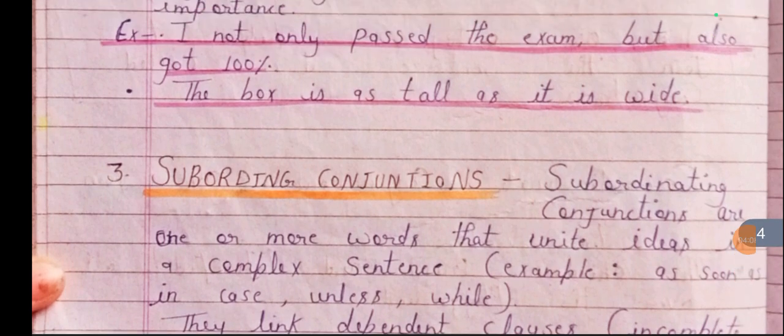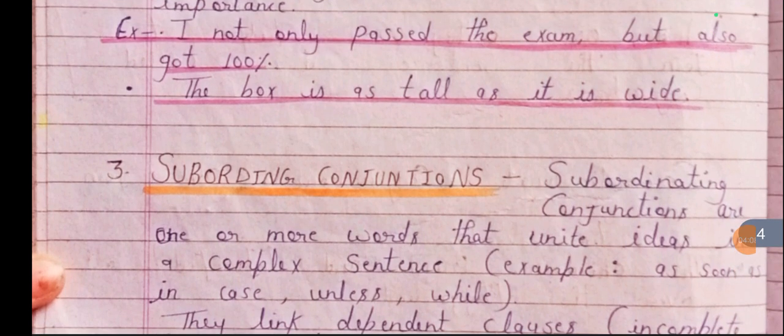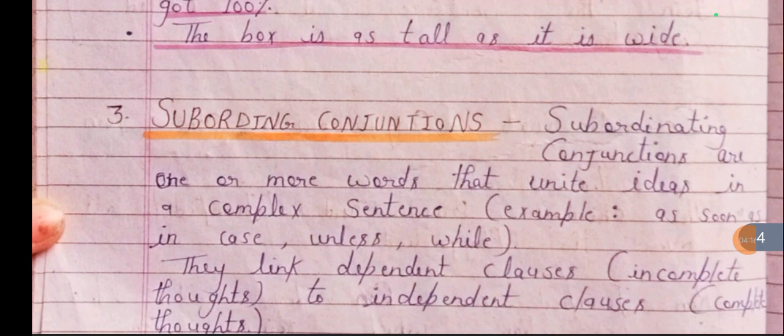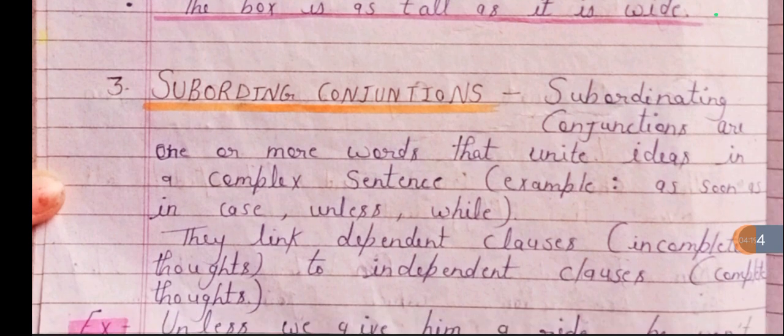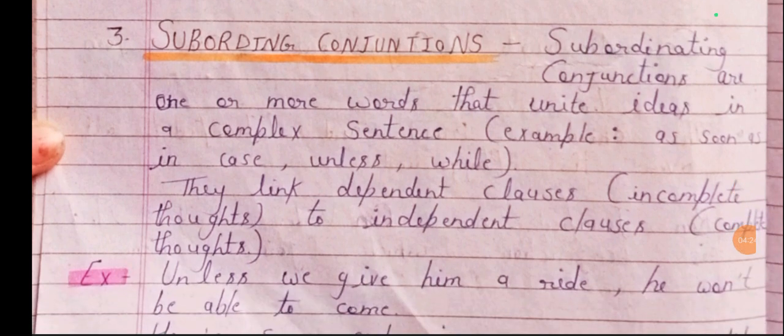For example: 'The box is as tall as it is wide.' Here, 'as' and 'as' work as a pair, making it a correlative conjunction.